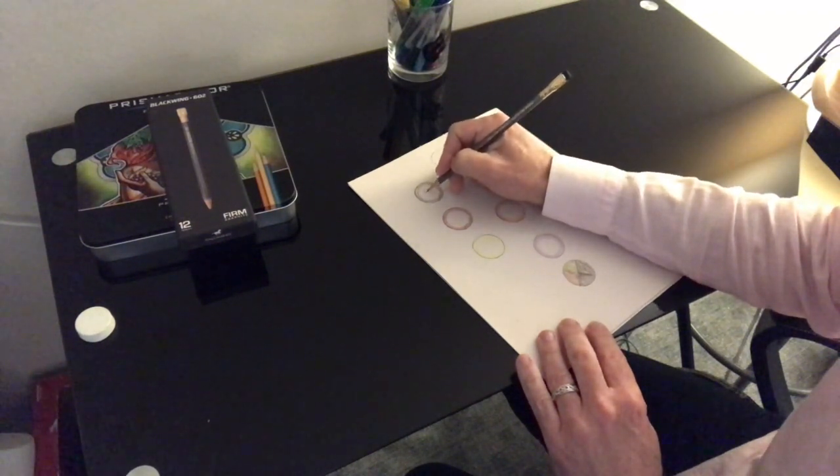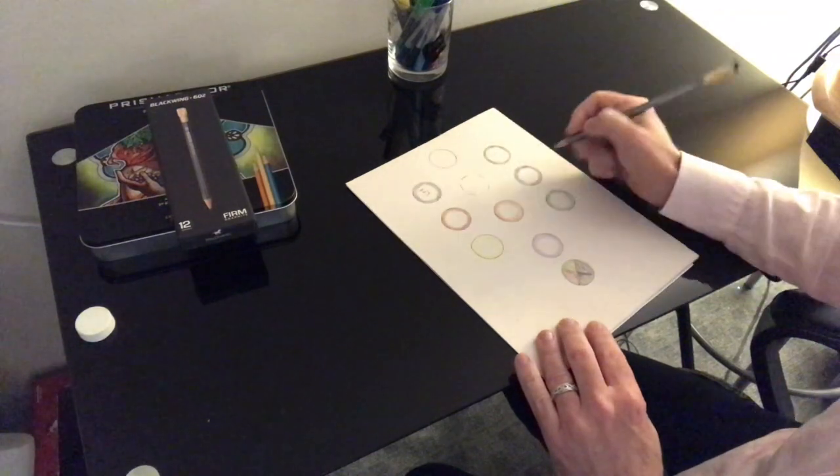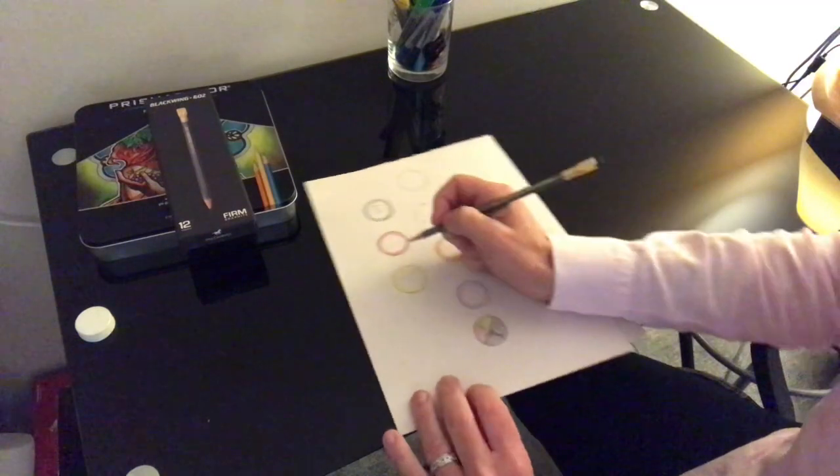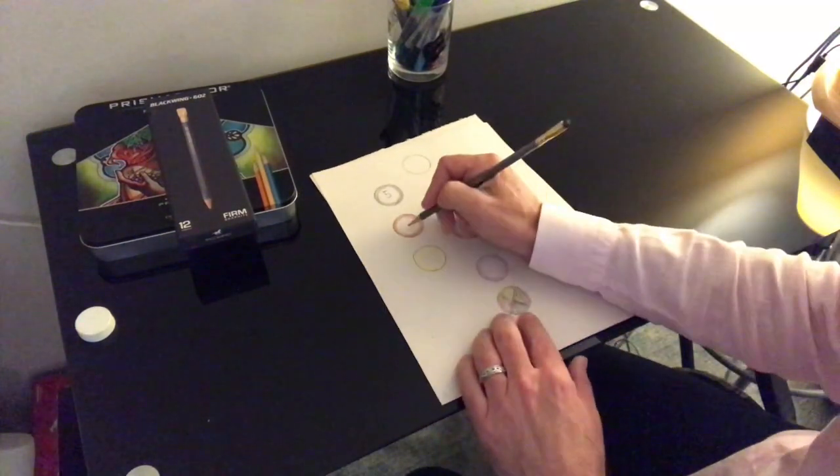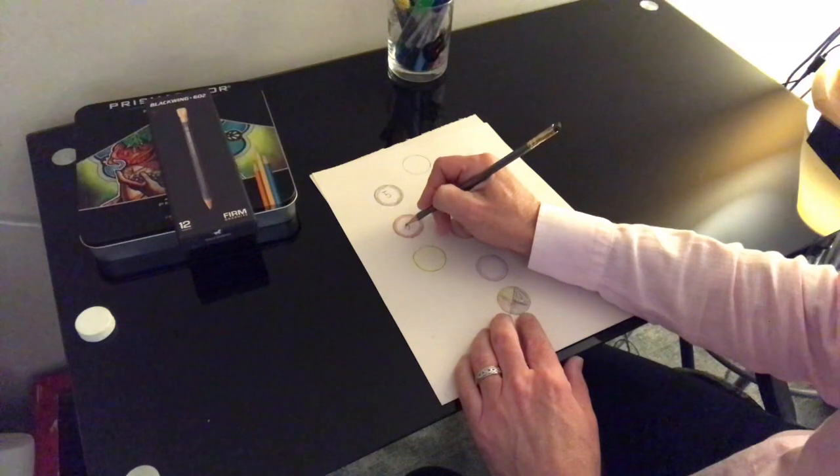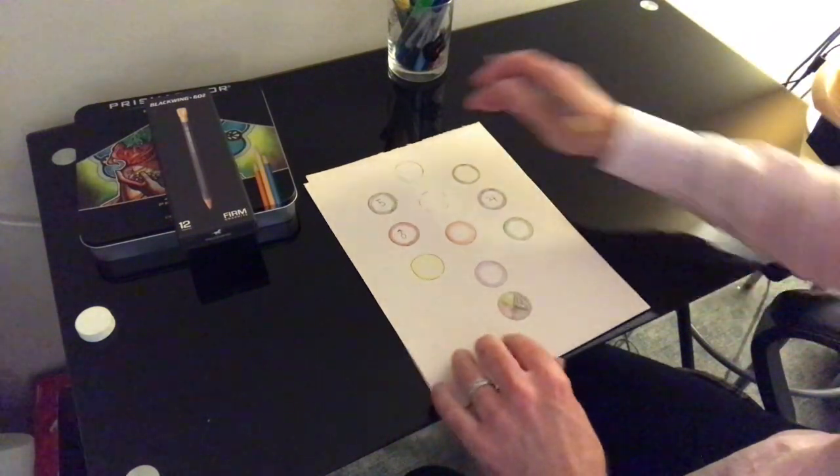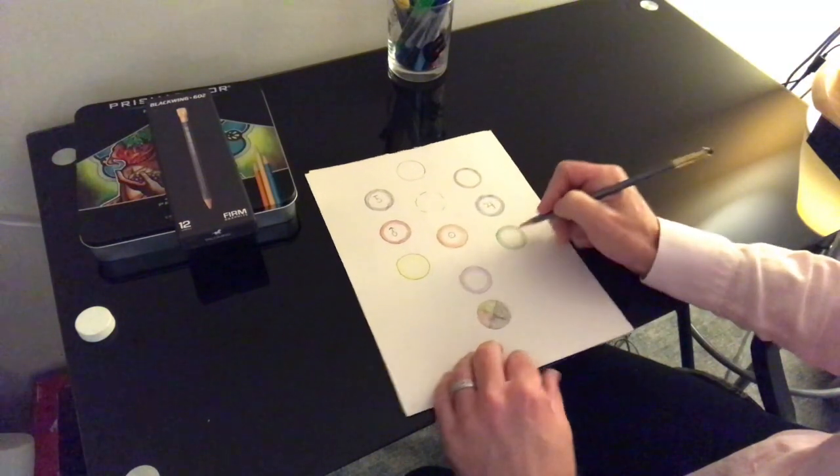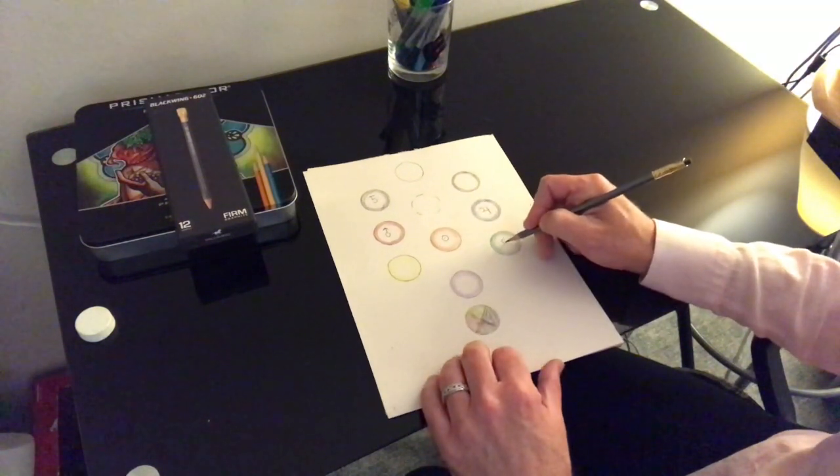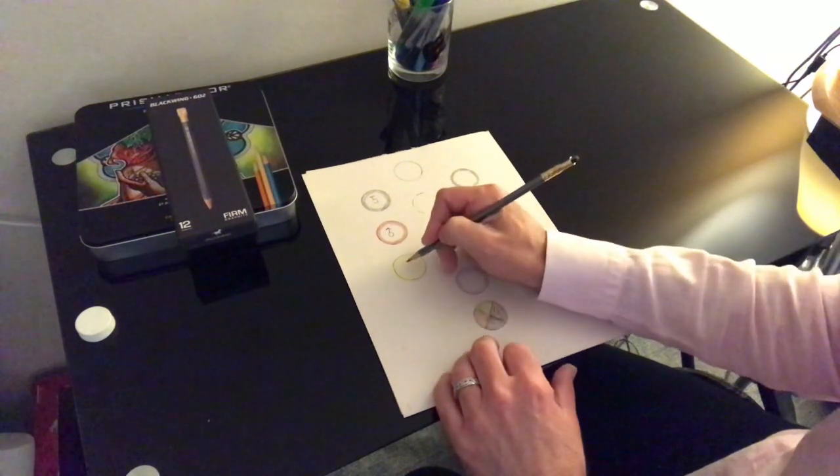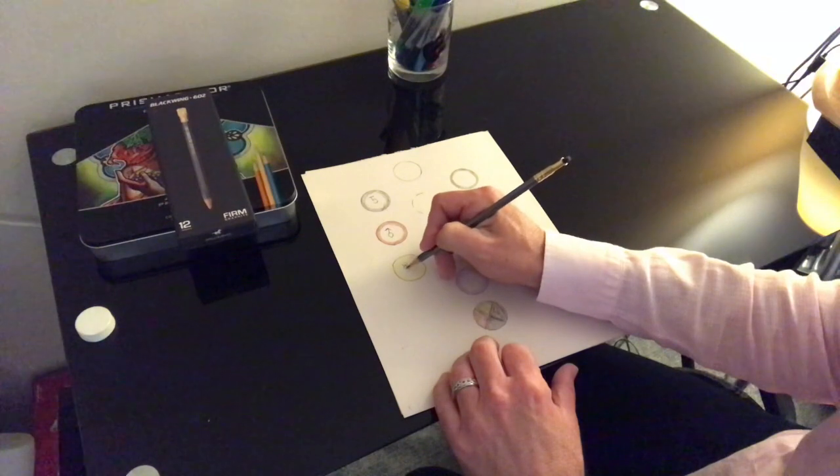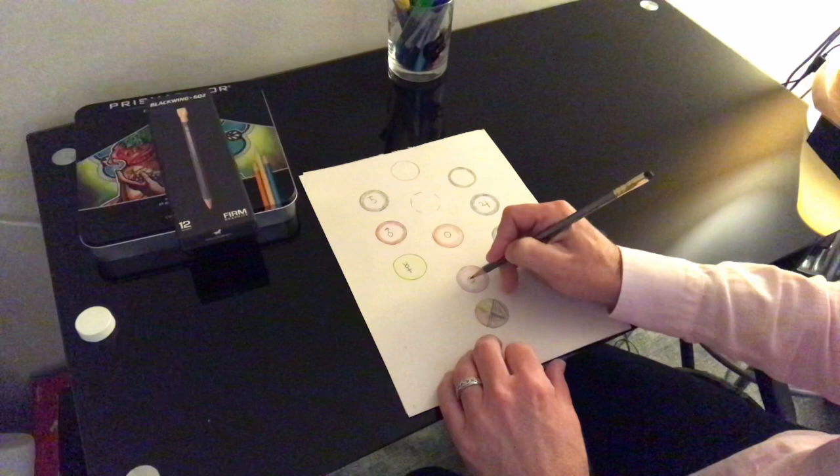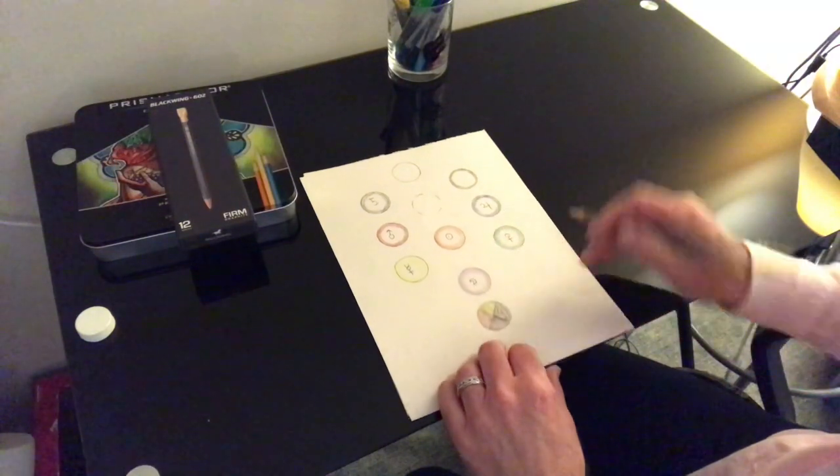We have Saturn here, which is Kassiel. We have Jupiter here, which is Sakiel. We have Mars here, which is Samael. We have the Sun here, which is Mikael. We have Venus here, which is Anael. We have Mercury here, which is Raphael. And we have the Moon here, and that is Gabriel.